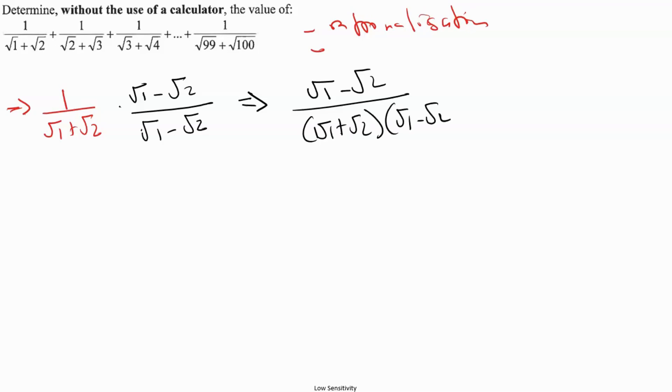So we can expand this. This is root 1 minus root 2 over root 1 times root 1. Root 1 times root 1 is root 1. Root 1 times root 2 becomes minus root 1 root 2 plus root 1 root 2 minus 2.